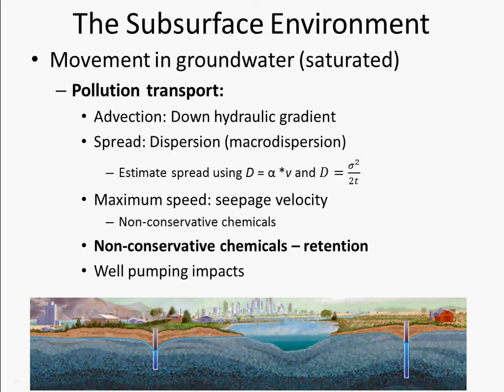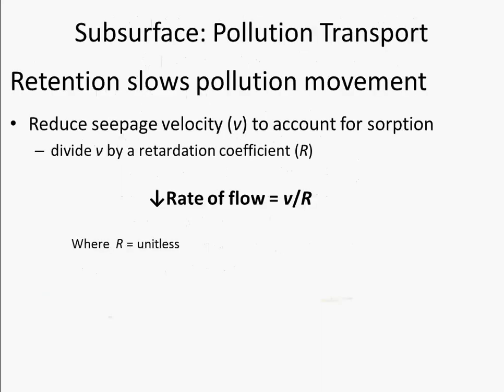In this first video I'm going to do a little bit of review of what we did at the end of class — talking about non-conservative chemicals, how they're retained in groundwater, and how that slows them down from their maximum rate of seepage velocity. We want to account for retention of pollutants, essentially sorbing to soil, and we do that by reducing seepage velocity to account for sorption.